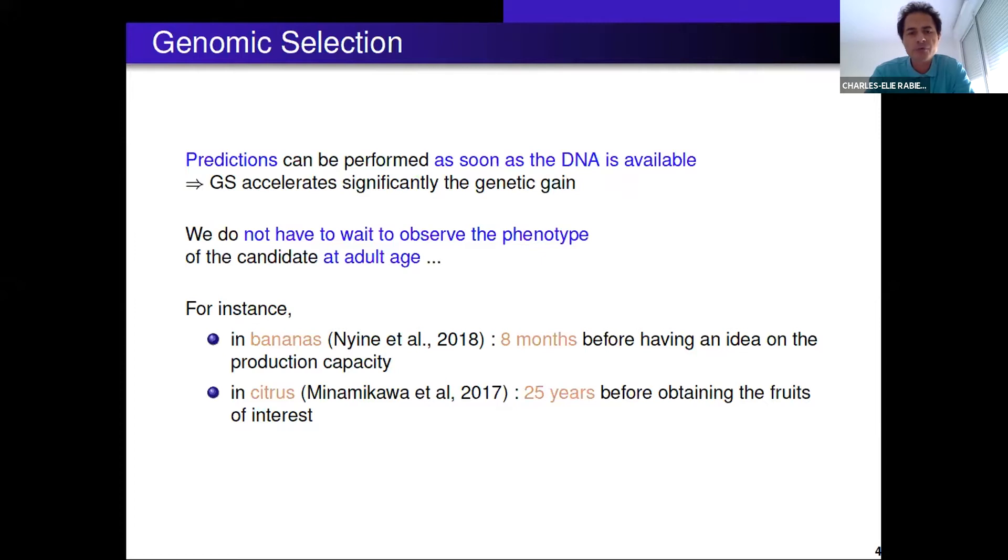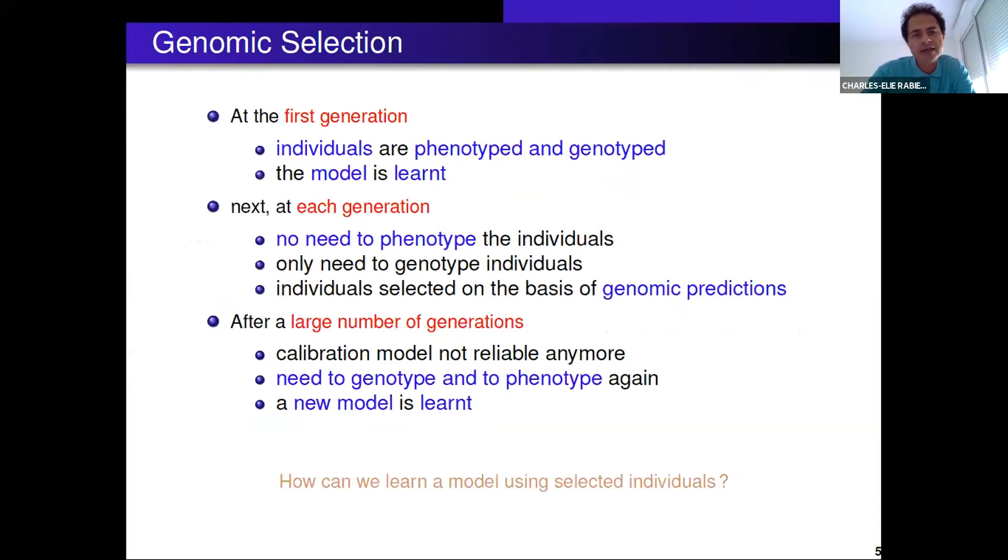With genomic selection you won't have to wait for such a long time because once DNA is available you can perform predictions and go to the next generation. To be clear, at the first generation we phenotype and genotype, we learn a model, and then at the next generation we only genotype, perform predictions, and select individuals on the basis of the predictions. But the problem is that once you've done a large number of generations your model is not reliable anymore, your predictions are not good anymore. You will need to phenotype again and learn a model again, but your individuals have been selected over time, so you have to learn a model using extreme individuals.